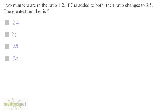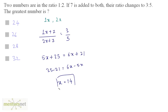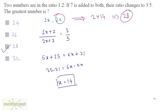The two numbers are in the ratio 1:2, so the numbers are x and 2x, with x being the common factor. 7 is added to both and the ratio becomes 3:5, so (x+7)/(2x+7) = 3/5. Cross-multiplying: 5x+35 = 6x+21. Therefore x = 35−21 = 14. The greater number is 2x = 2×14 = 28. So option C is the correct answer.